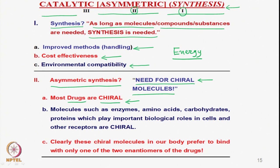Most drugs are chiral. Molecules such as enzymes, amino acids, carbohydrates, and proteins all play very important biological roles in our cells, and receptors are also chiral because we have hormones, proteins, lipids, and carbohydrates — all of them are basically optically active and optically pure. Therefore, we need optically active molecules as drugs.